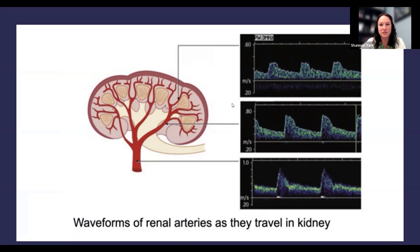I think this is a really good slide, and it just shows the normal expected waveform patterns of blood flow as we move through the kidney. Starting in the renal artery, the main renal artery, one of the really important key points here, aside from the velocity, is seeing a sharp upstroke in systole and then an early systolic peak.